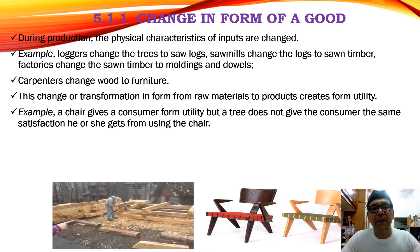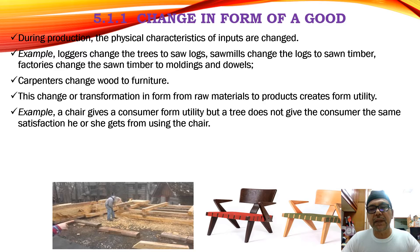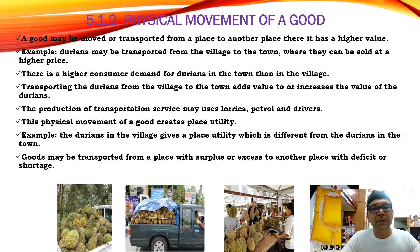A chair gives the consumer a form of utility, but the tree does not give the consumer the same satisfaction he or she gets from using the chair. So that is how production has helped the process. A good may be moved or transported from one place to another — that is a higher value. From a log, it becomes furniture which has a higher value than a piece of log.